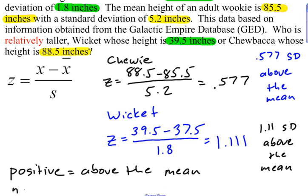You can have negative z-scores. If either one of these guys, either Chewbacca or Wicket, had been shorter than the mean, then they would have ended up with a negative z-score. And a negative z-score isn't bad. It just means that that particular data value is below the mean.